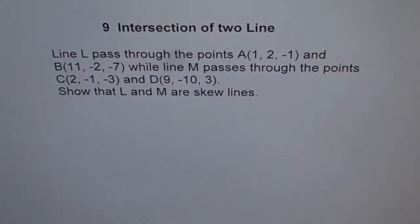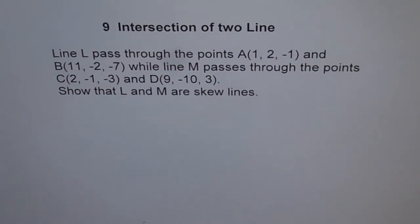Intersection of two lines. Line L passes through points A(1, 2, -1) and B(11, -2, -7), while line M passes through points C(2, -1, -3) and D(9, -10, 3). Show that L and M are skew lines.